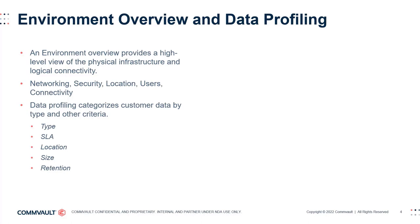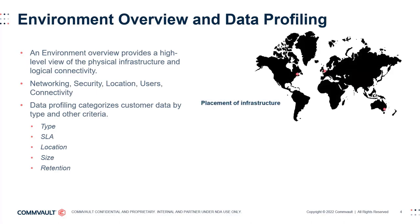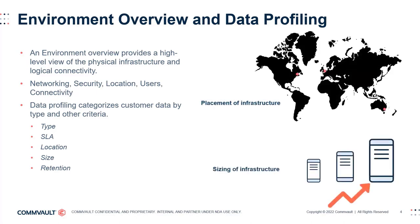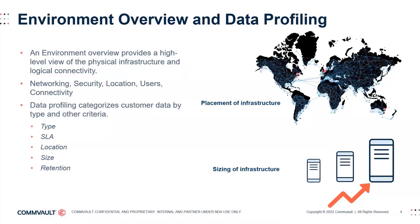We will discuss some sample data profiles in the coming slides, but as a simple introduction, a basic profile would define criteria such as the data type, SLA, its location, size, and retention requirement. Establishing an environment overview and the data profiles is an important discovery exercise, as it sets up the next phases of your solution architecture, helping you determine where to place core Commvault infrastructure components, how to size them, how they will connect and communicate with the system, and how to establish data protection plans relating directly to how each set of data should be managed under Commvault.